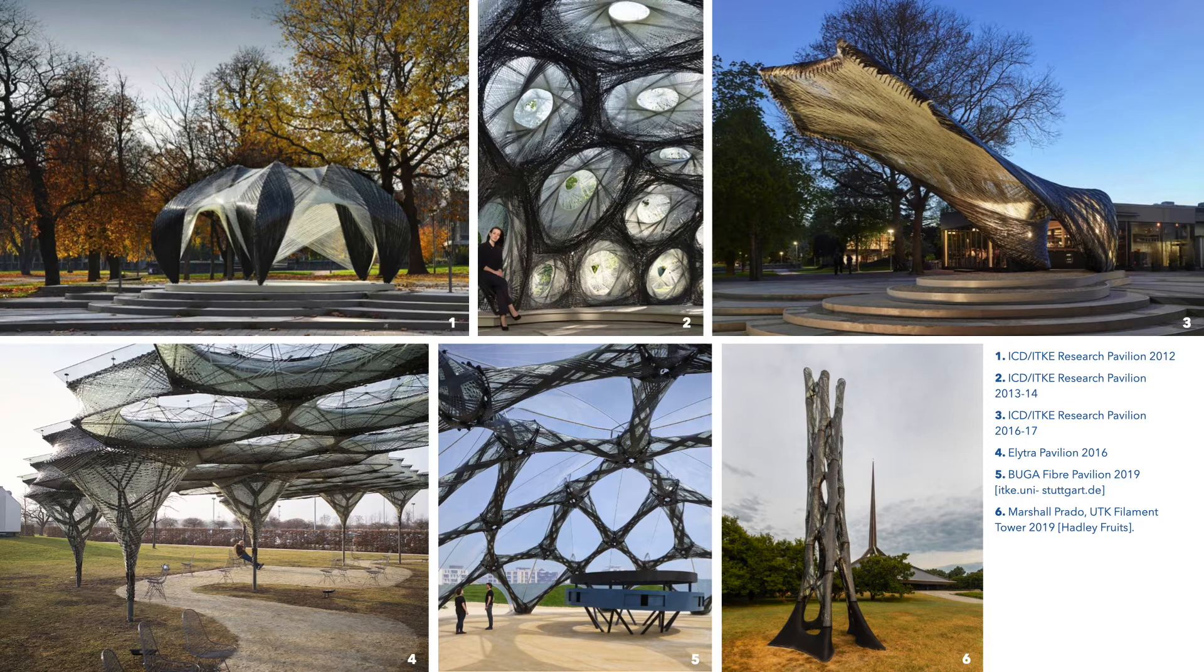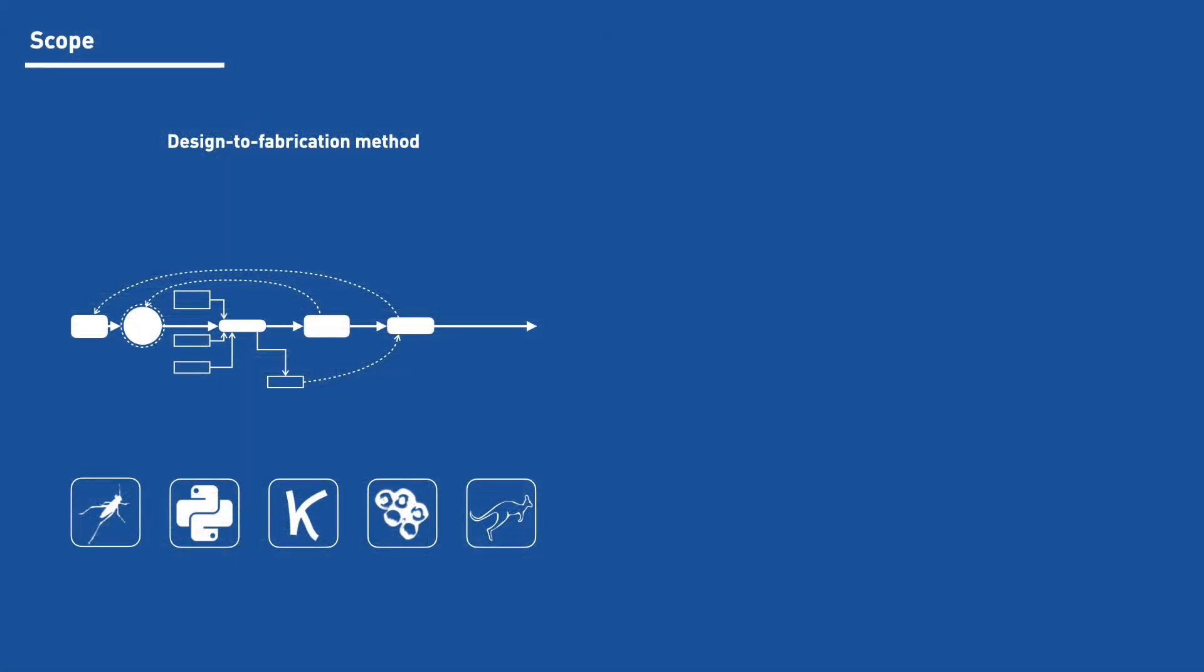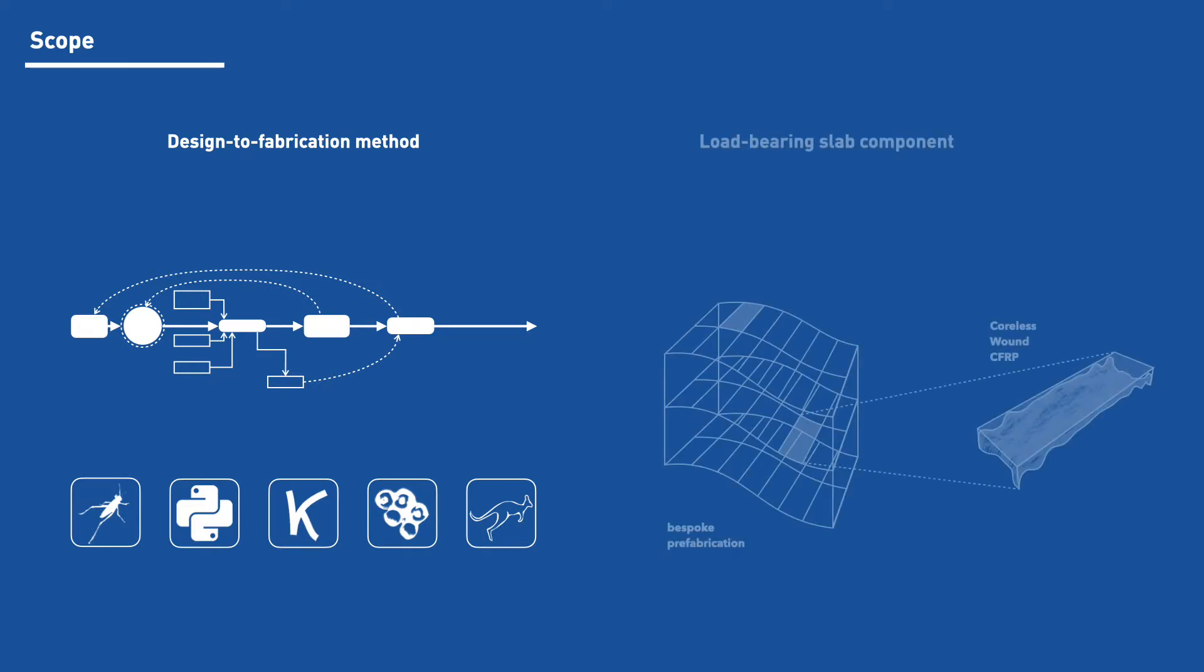To date, this technique has been explored to produce several performative structures such as canopies, large-span domes and cantilevers, among others. However, the sequential nature of its filament-based production process imposes a series of geometrical constraints that limits the scope of designs that are simultaneously performative and suitable for fabrication. The present paper outlines a novel design to fabrication method that aims to extend the scope of Coley's filament winding towards the realization of load-bearing structures for slab components.